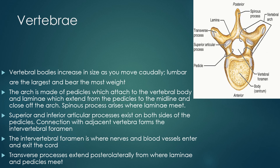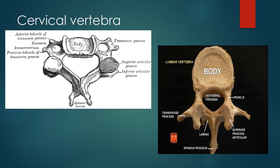Transverse processes extend posterolaterally from where the laminae and the pedicles meet. The cervical vertebra has a unique design — the vertebral body is very small, and the transverse process has a unique feature called the transverse foramen. If you think about what runs through that transverse foramen in the cervical spine — vertebral arteries, correct. Also, cervical vertebrae have bifid spinous processes, at least all except C1 and C7.